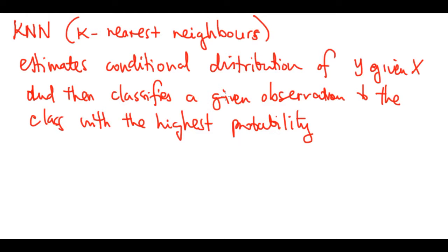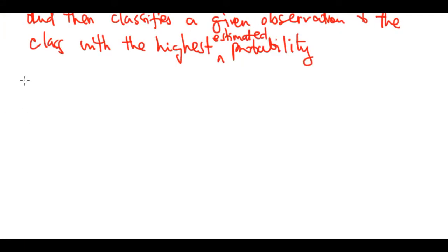This is the highest estimated probability - it's jargon, but let me explain what it really means. Here are the steps that happen. Let's say we have some number of classes. We pick an integer k.